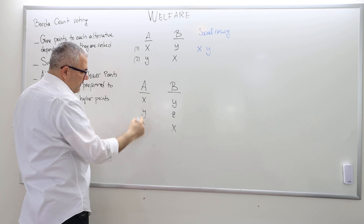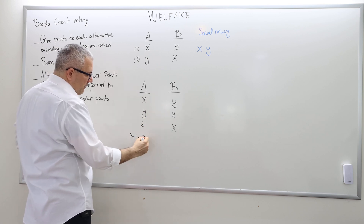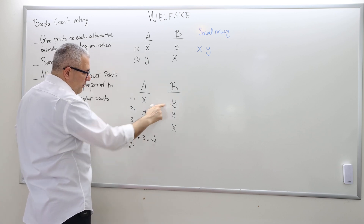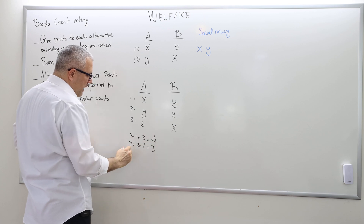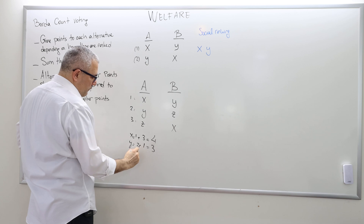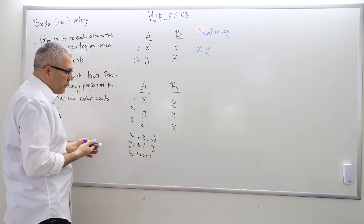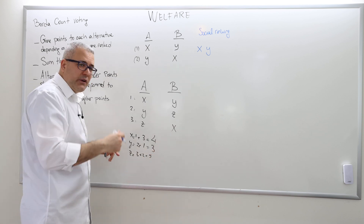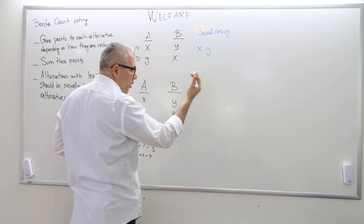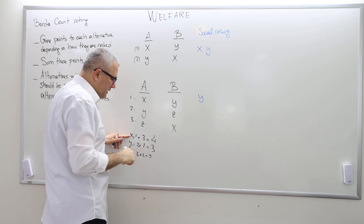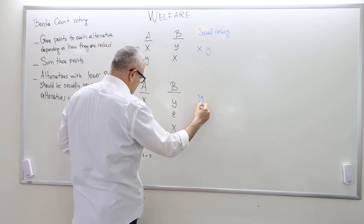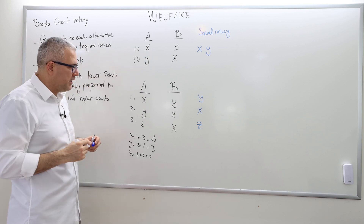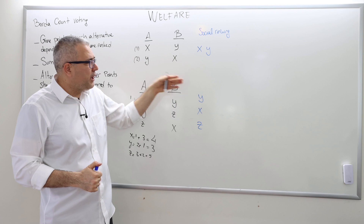Now we calculate the Borda count. X gets one point from A and three points from B, totaling four points. Y gets two points from A and one point from B, totaling three points. Z gets three points from A and two points from B, totaling five points. The alternative with the smallest count is Y at three, then X at four, then Z at five.